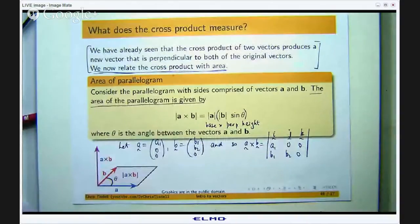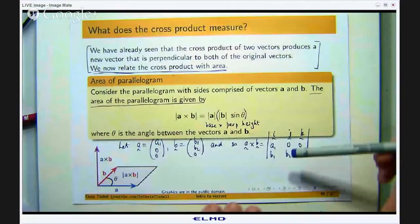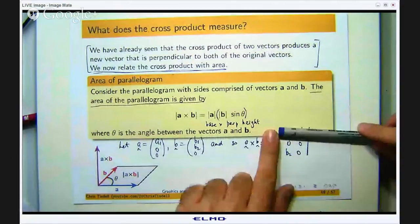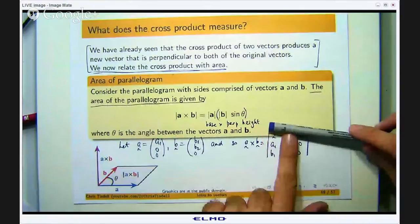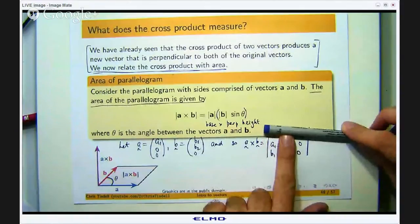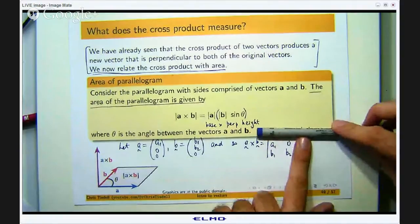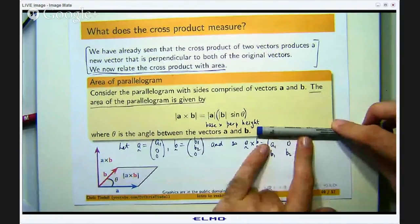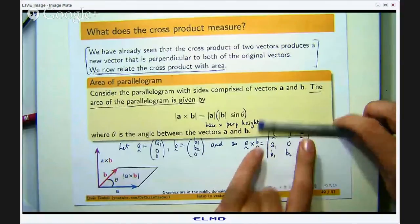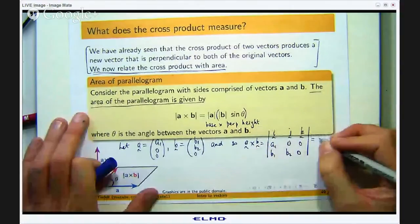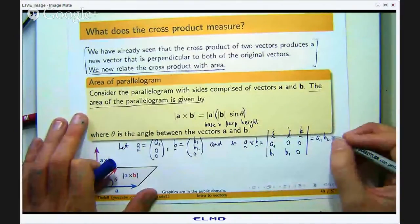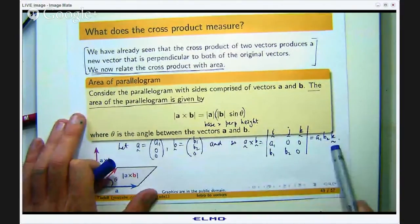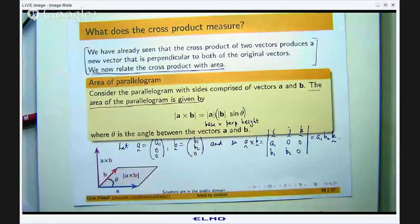So let us work out this determinant. Well if I start up here, I cover up the i and I look at the determinant of what is left, that is going to be 0. Then I move on to the j, I do a bit of cover up and I look at the determinant of what is left, that is again 0. I cover up the k and I look at the determinant of what is left, that is going to be a1 times b2 minus 0. So this then is the cross product of these two vectors.